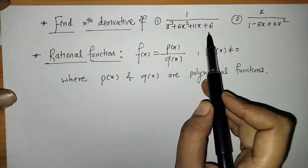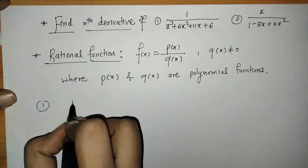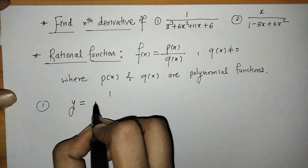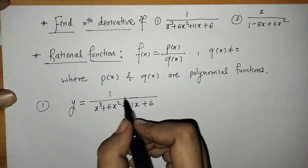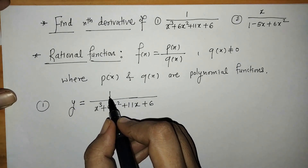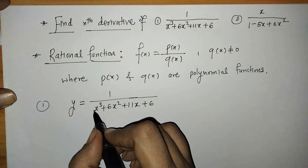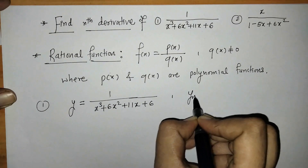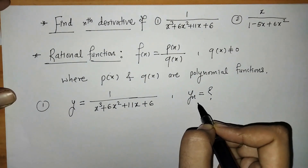Now let's start with the first function. We write the given rational function as y. Here in the numerator we have a constant polynomial, and in the denominator we have a polynomial of degree 3. We have to find its nth derivative, that means we have to find y_n.